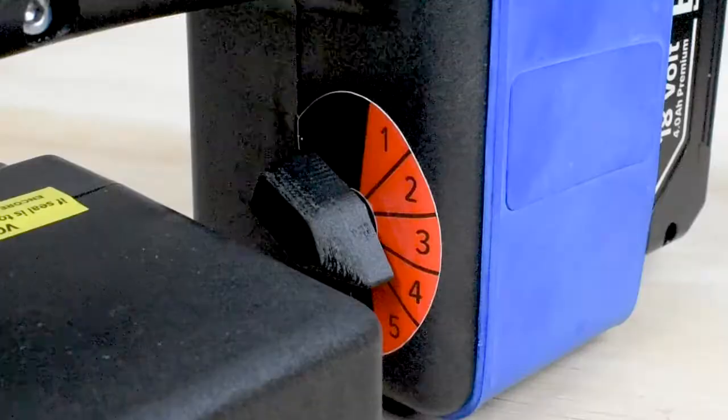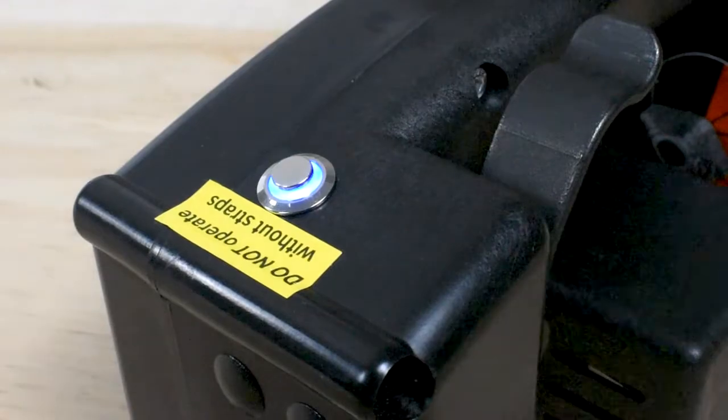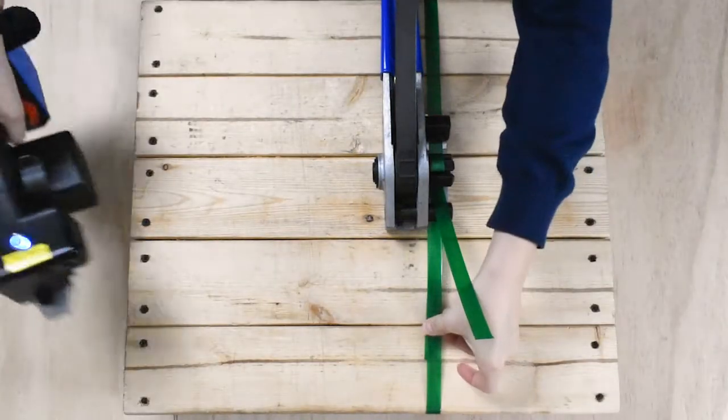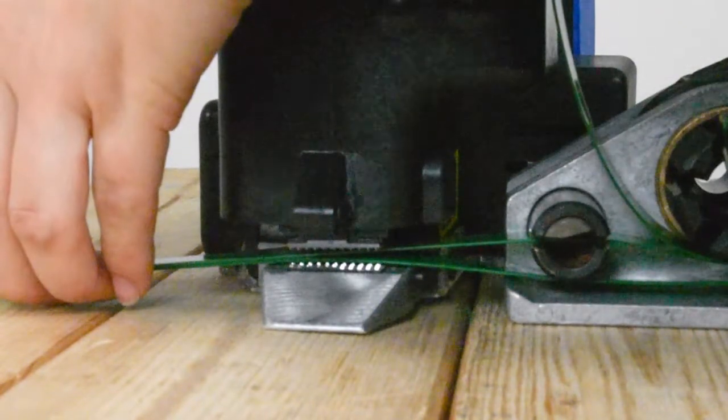Once your load is tensioned, adjust the time setting and push the top button once. Slide the EP1265 perpendicular to the tensioner making sure both pieces of strap are between the sealing pads.